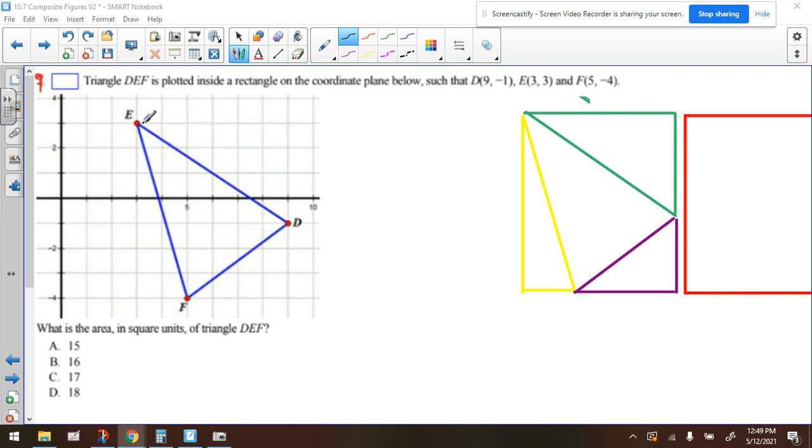So that's all been plotted, but if they didn't plot it for you, you would have to plot that and form the triangle. So what they want to know is what is the area in square units of this triangle?